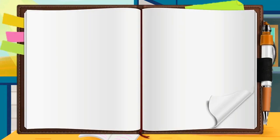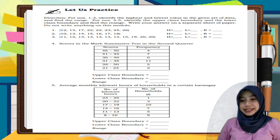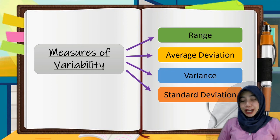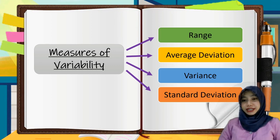Since you now know the four measures of variability, let's have some practice. In your self-learning module, page 12 of quarter 4, answer the 'Let Us Practice' section. You can practice more using your module. Remember that we have four measures of variability: the range, the average deviation, the variance, and the standard deviation.